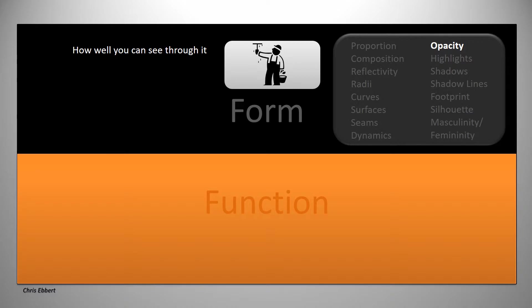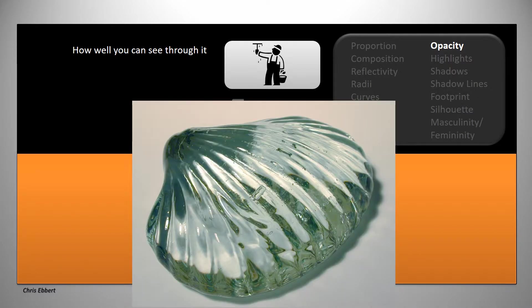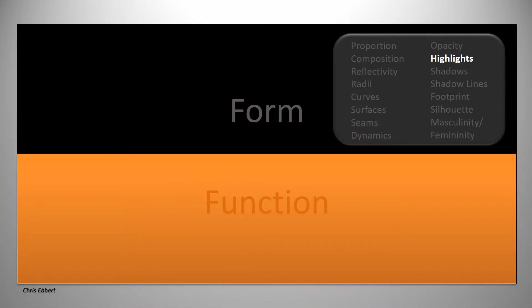You choose the opacity that also goes in, which means how well you can see through it. So the extent to which you can see through something is part of form and part of something that you decide as a designer.